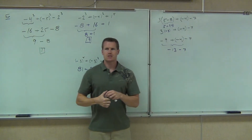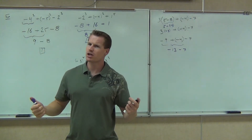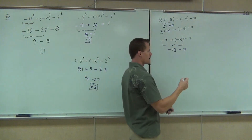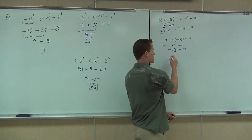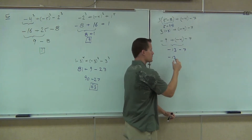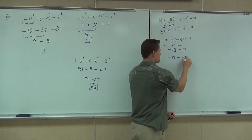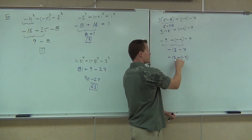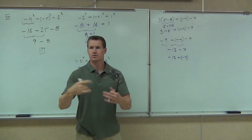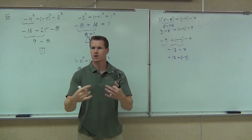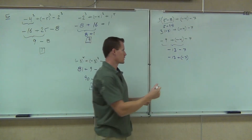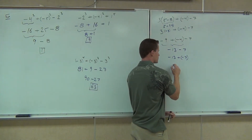Okay. Negative 13 minus 7 — we might want to change that one. Instead of negative 13 minus 7, we can write this as negative 13 plus negative 7. One sign to two different signs. We have the same sign — we need to add, keep the common sign. How much? Negative 20.